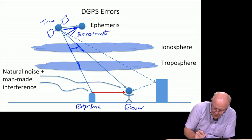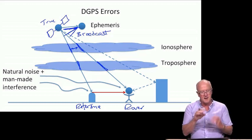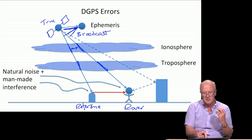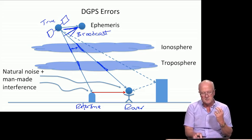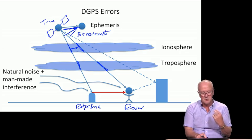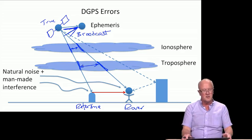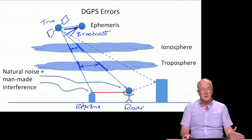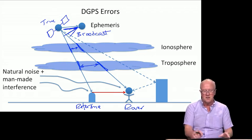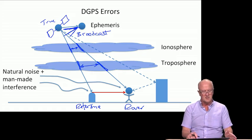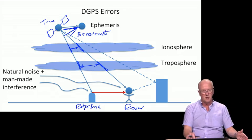Similarly, tropospheric delays are introduced by the column of troposphere surrounding the wave going from the satellite to the rover minus the reference. Once again, if reference and rover are very close to each other, those cancel nearly perfectly. As reference and rover move apart, you can have more of a difference. So the errors attacked and reduced by differential GPS include the satellite clock — perfectly canceled — ephemeris, mostly canceled; ionosphere, mostly canceled most of the time; and tropo, mostly canceled.